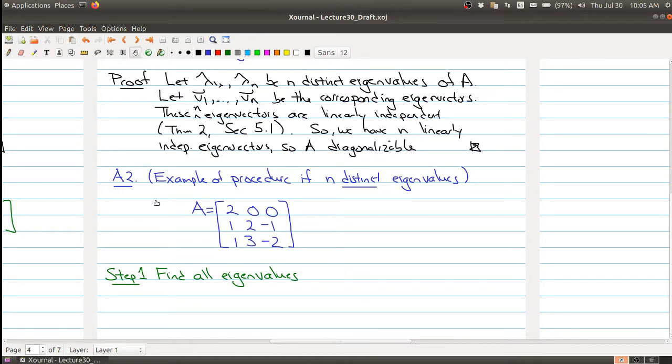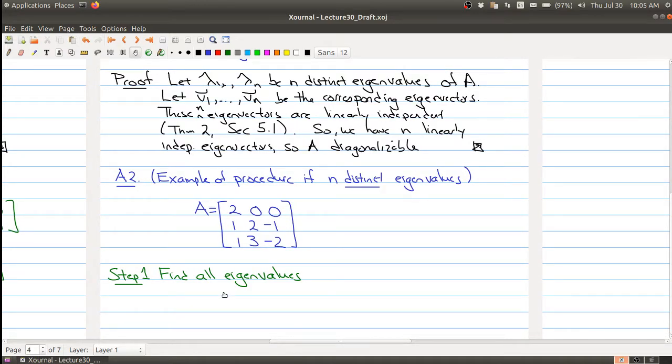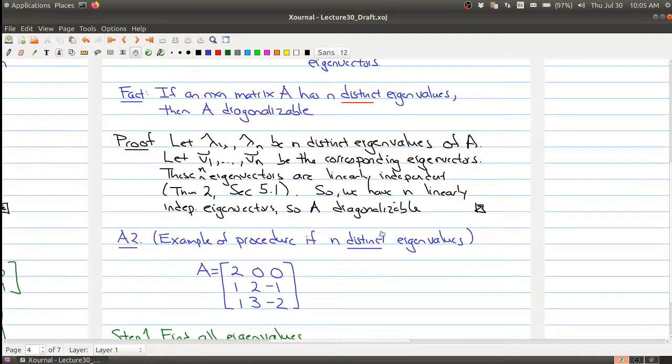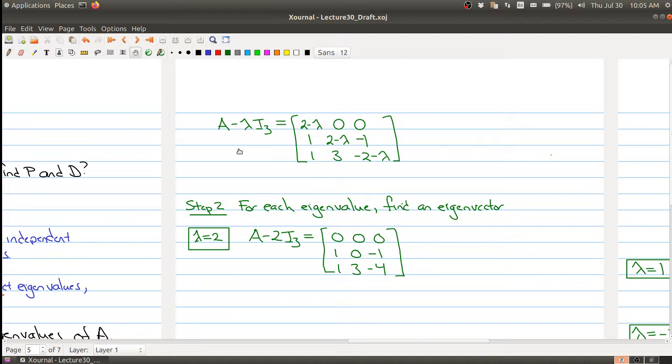So what we can tell from the diagonalization theorem is that somehow we're going to have to be looking for eigenvectors and eigenvalues, and that's not surprising, right? Because the diagonal matrix contains eigenvalue information. So what I want to do is give you an example of the procedure if there are distinct eigenvalues. So I'm starting with this matrix A, and step one is to find all the eigenvalues. So we start—I've started the work to set up the characteristic polynomial.